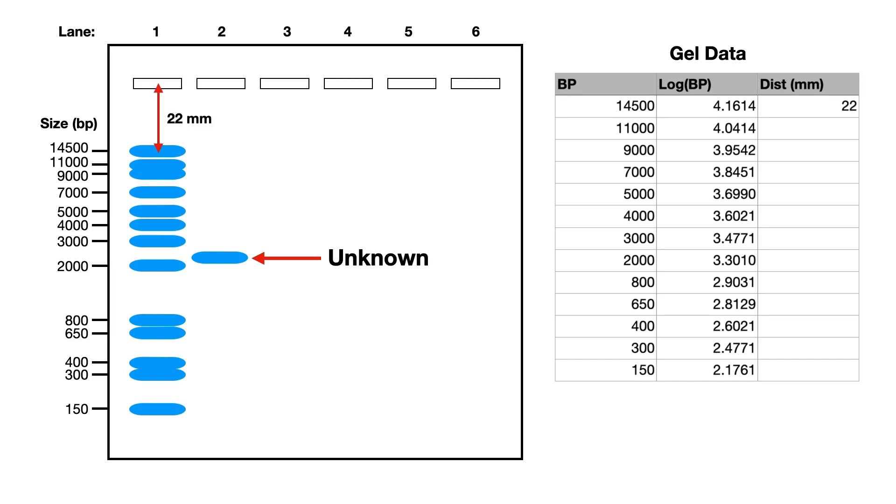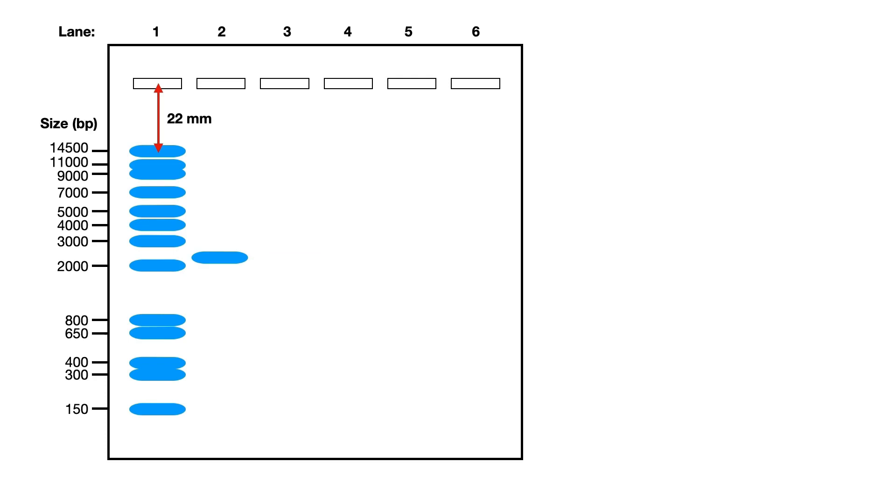So the first band has moved 22 millimeters on this size of image and we do that for the rest. We measure each one, we get these values with the unknown band moving 58 millimeters. So that's our gel.